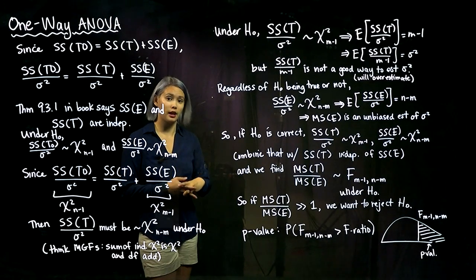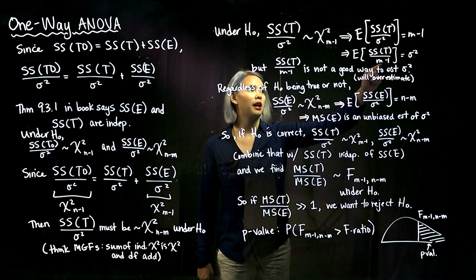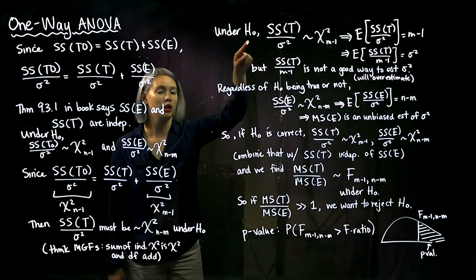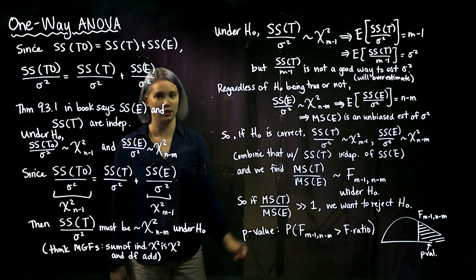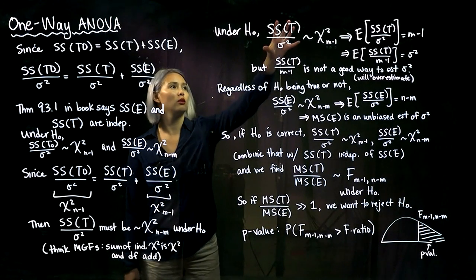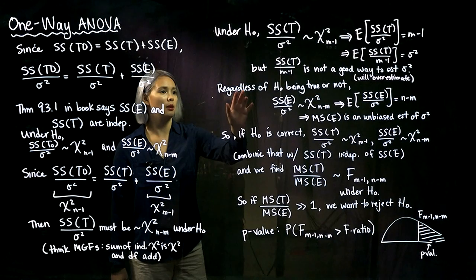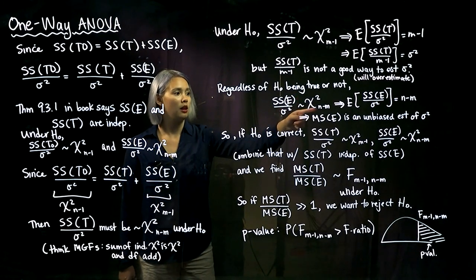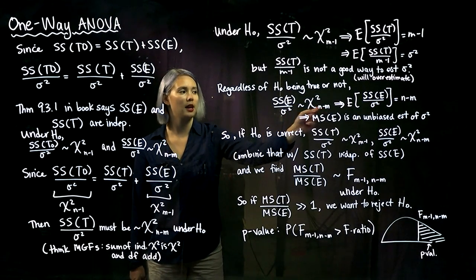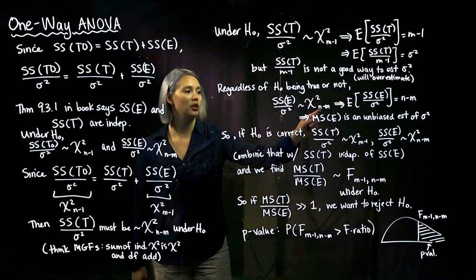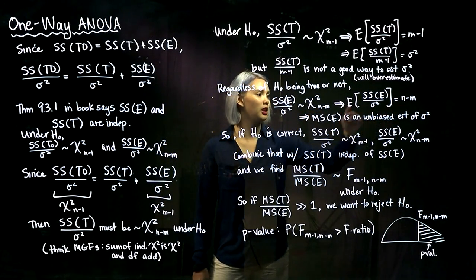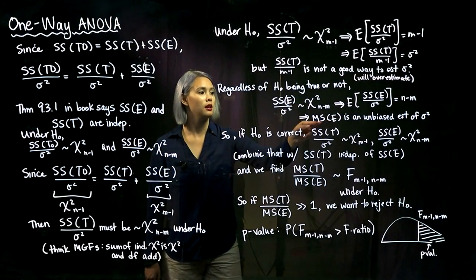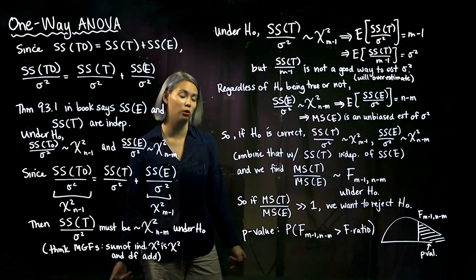You might be tempted to estimate sigma-squared by taking the treatment sum of squares and dividing by m minus 1, but this is not a good estimator because it relies on the null hypothesis being true. If the null hypothesis is not true, we'll actually be overestimating sigma-squared. SSE divided by sigma-squared is chi-squared with n minus m degrees of freedom regardless of whether the null hypothesis is true, so its expectation is n minus m. Therefore we can use MSE — SSE divided by n minus m — to estimate sigma-squared as an unbiased estimator.